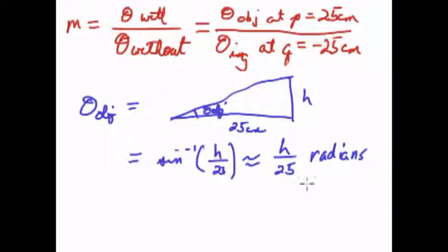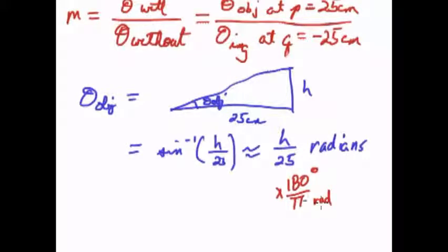If you want it in degrees, just multiply it by 180 over pi, 180 degrees per radian. And then if you want that in arc minutes, you divide by 60 and if you want it in arc seconds, you divide it by 3600.